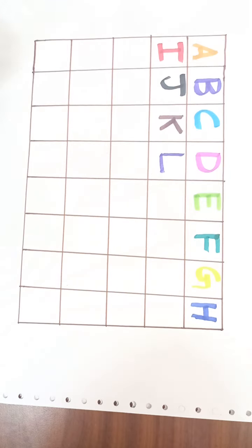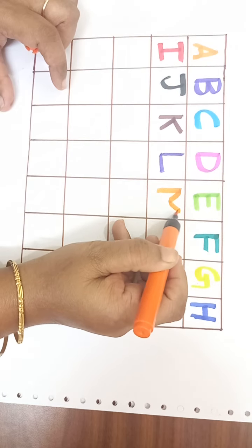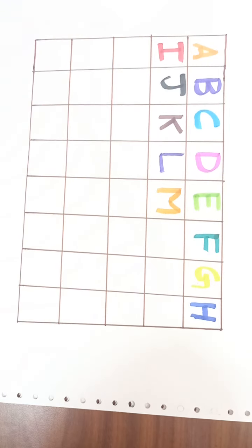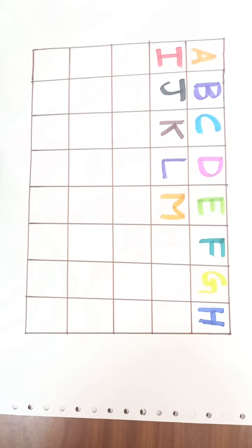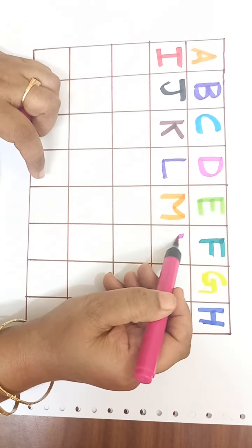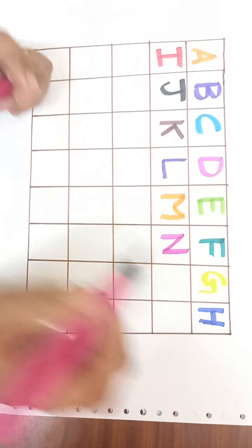Orange color. M. M for matte. M-A-T, matte. Pink color. N. N for nest. N-E-S-T, nest.